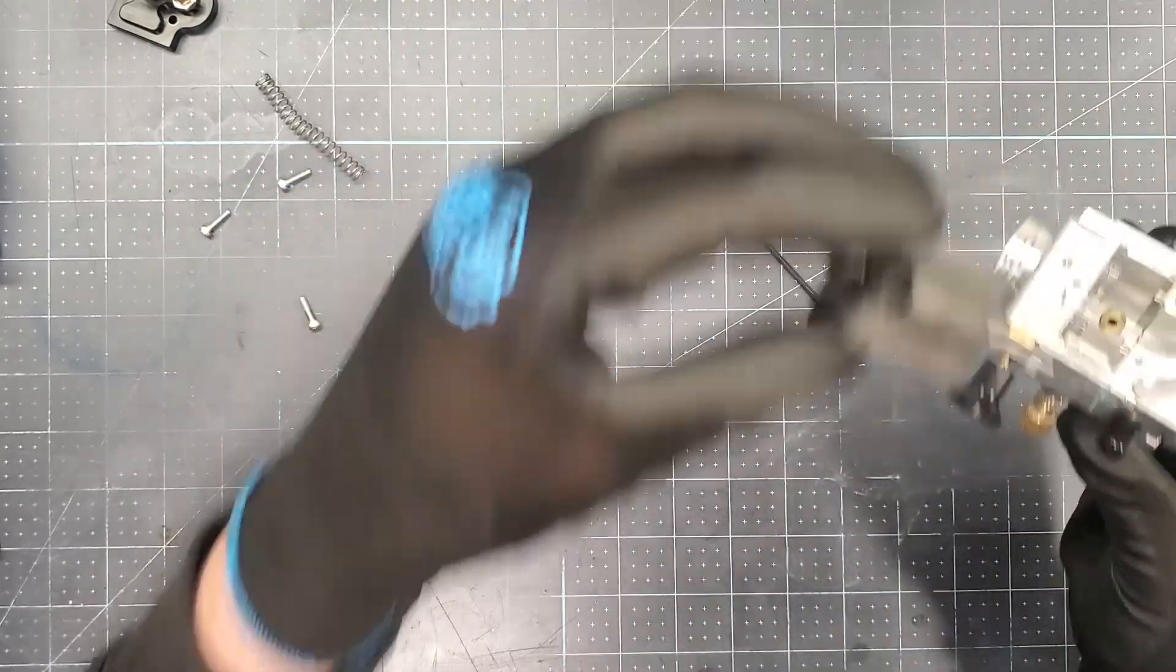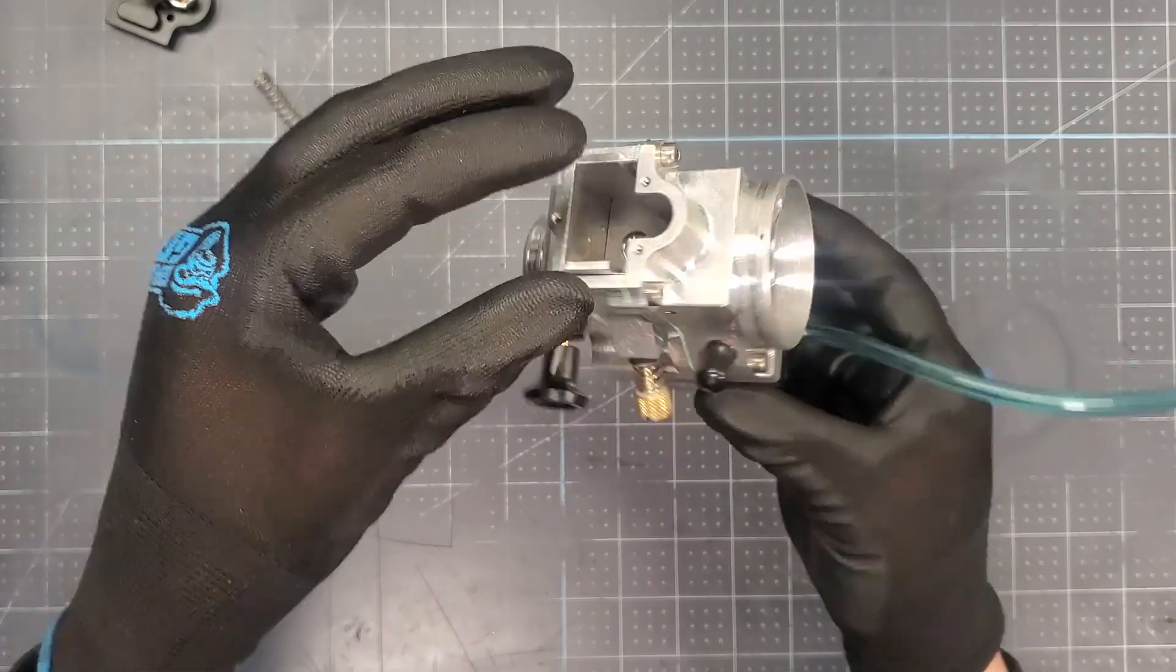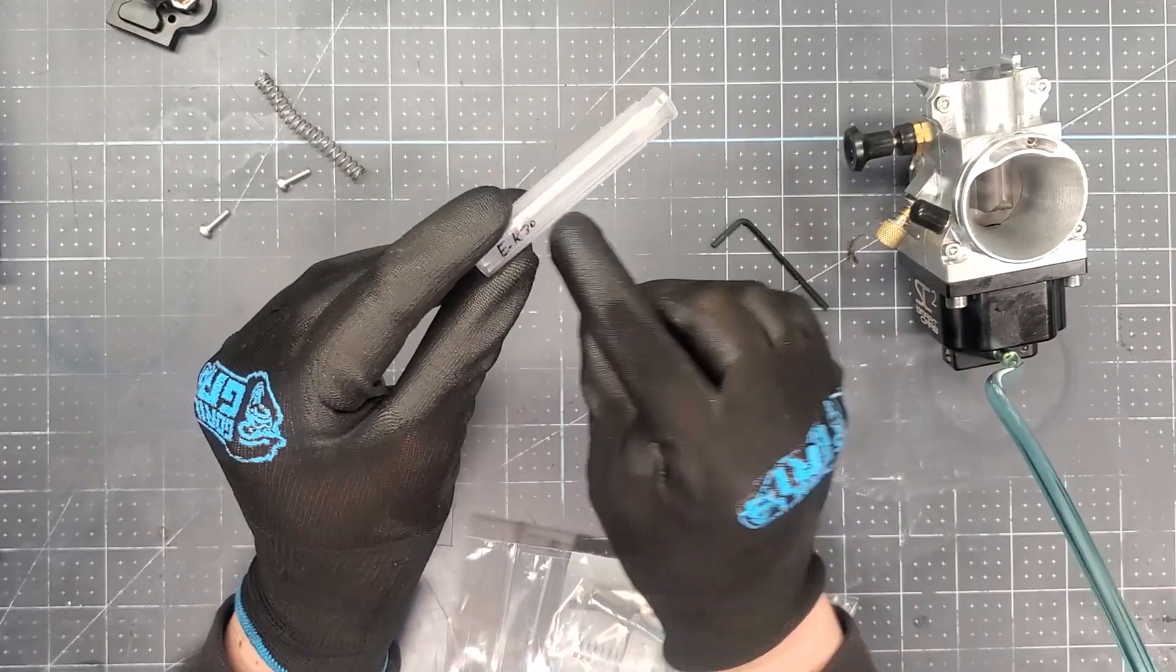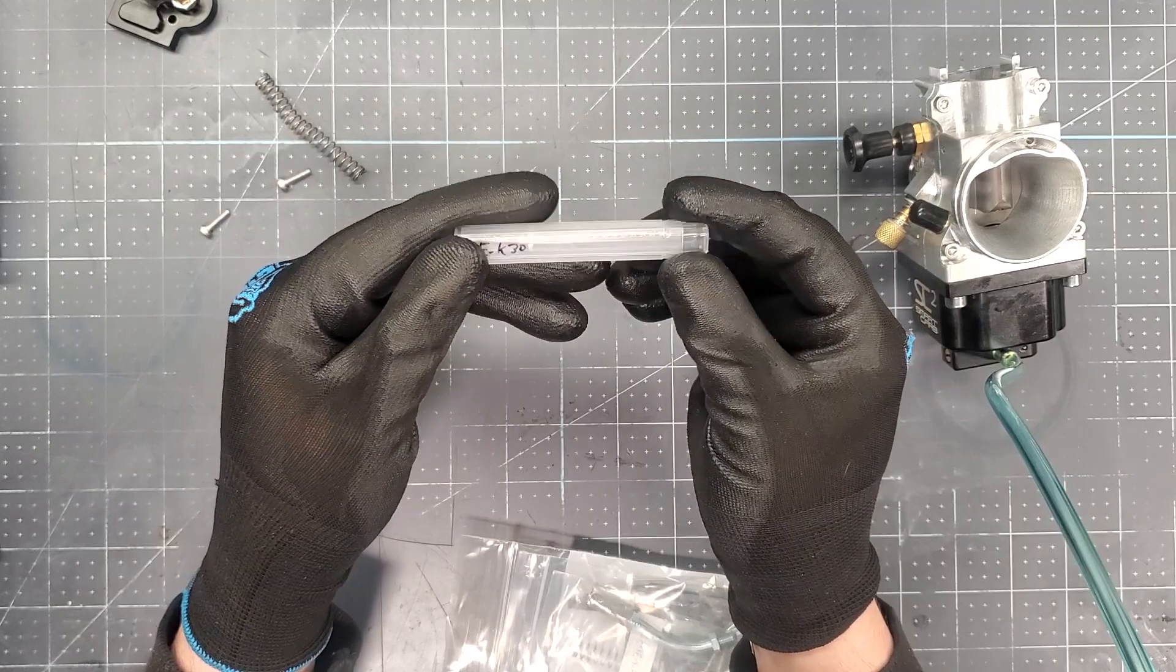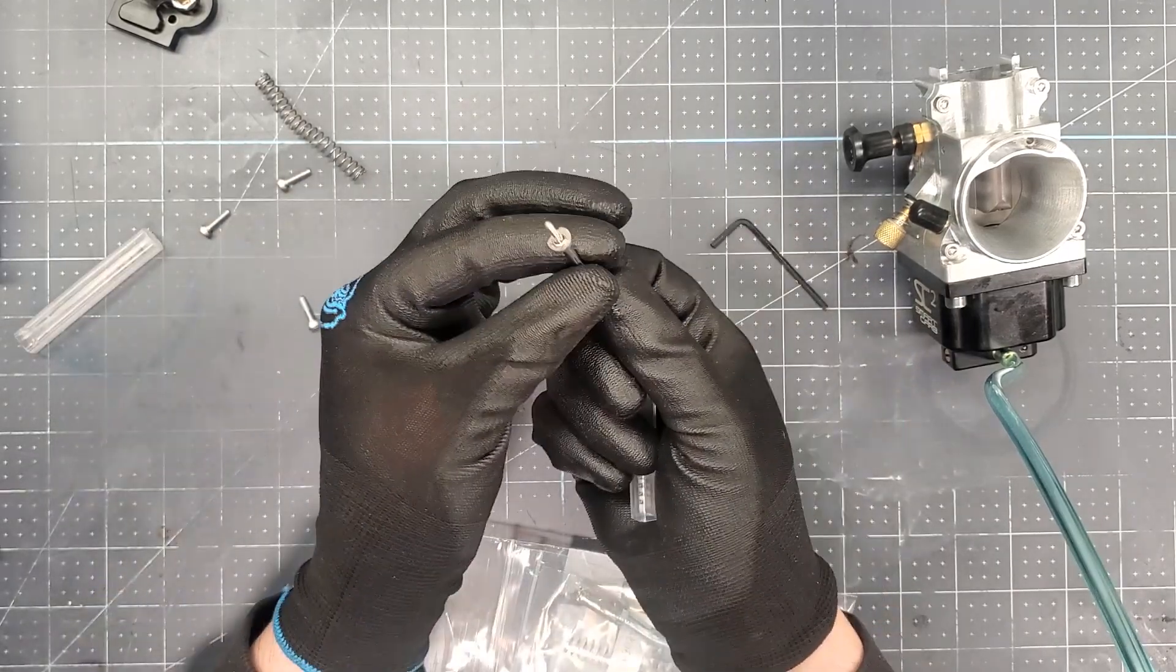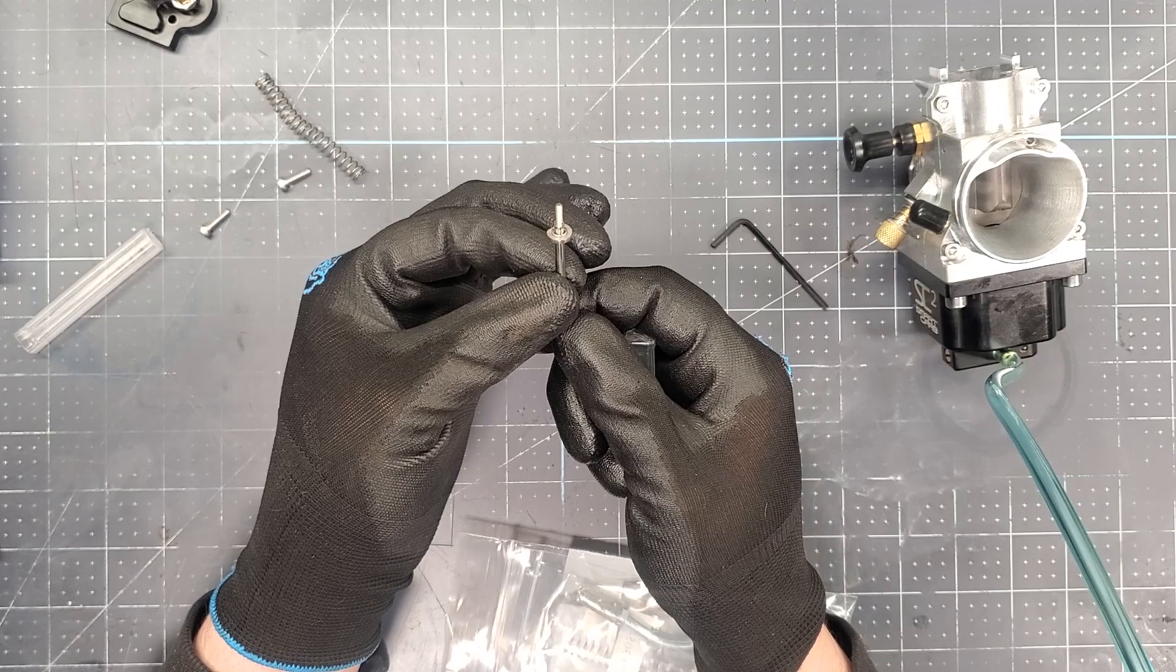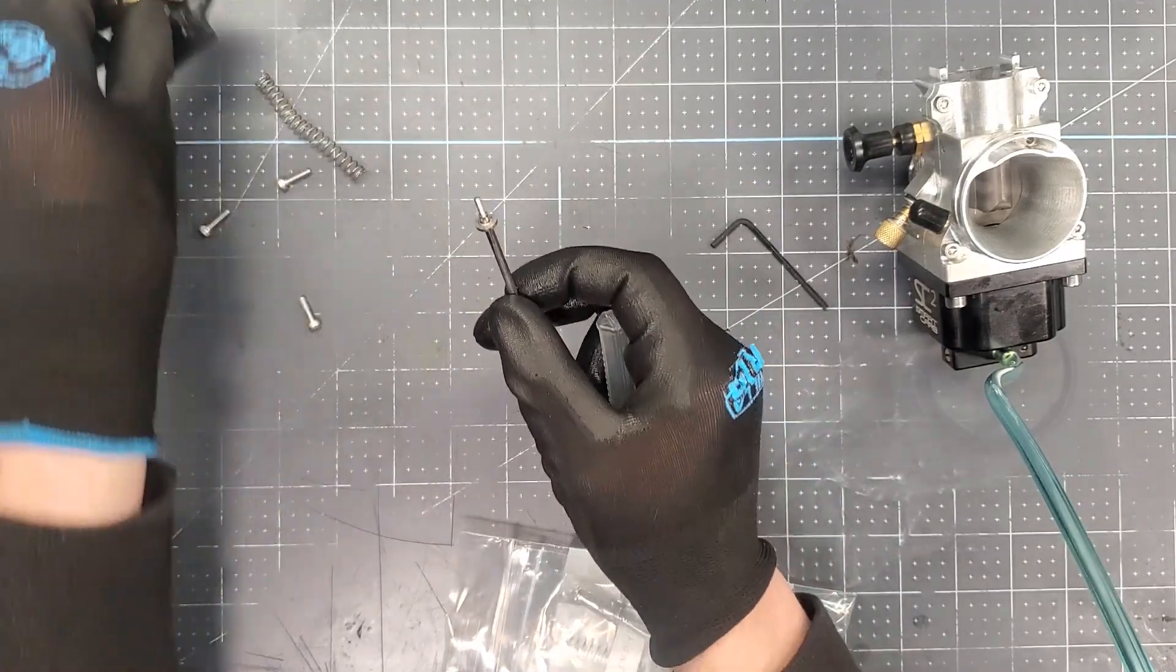This eliminates all need for a plethora of jets to have around the shop. There are different metering rods, but your base adjustment from the factory has to be way off for you to actually get to use a different metering rod. What is great about these metering rods is they are made from stainless, they basically do not wear out. They have a little thread on top, which is used to adjust the height of the metering rod using this knob on the top.